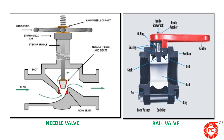Here are the major parts of each valve. In the needle valve, there is a small hand wheel attached to a spindle or stem. The stem moves up and down when the hand wheel is rotated, opening or closing the valve. When positioned in between, it acts as a regulating valve. Notably, the flow changes direction inside a needle valve, which causes a considerable pressure drop and frictional loss due to this directional change.